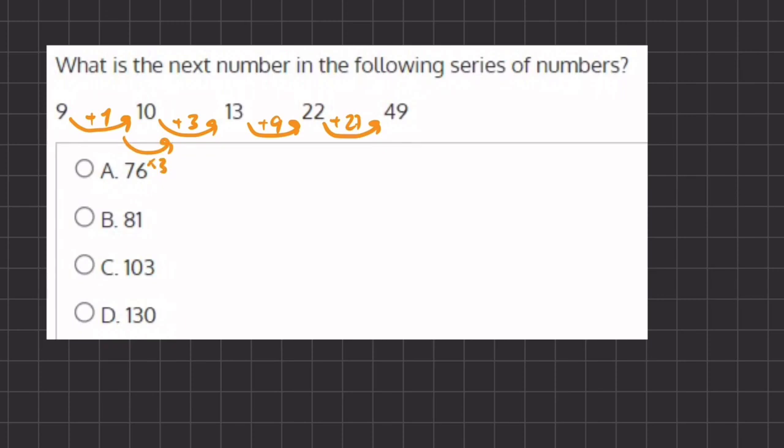So 1 times 3 gives us 3. 3 times 3 gives us 9. 9 times 3 gives us 27.